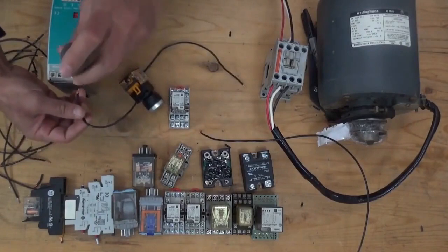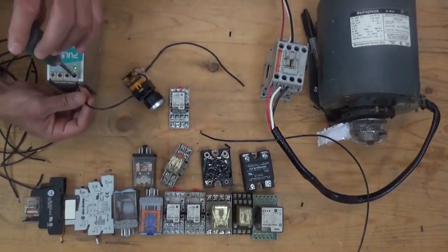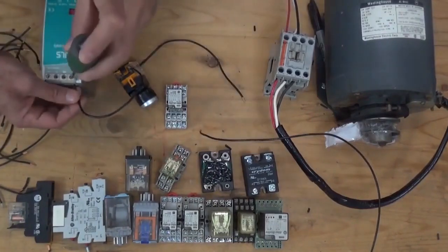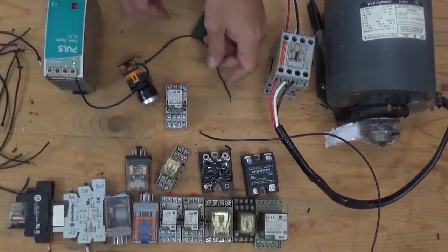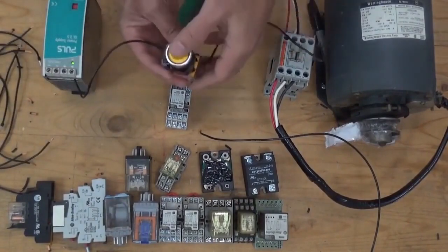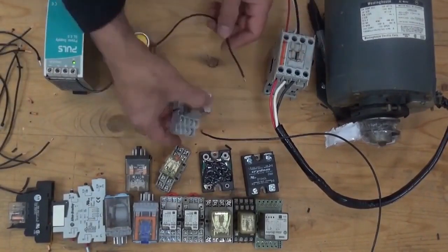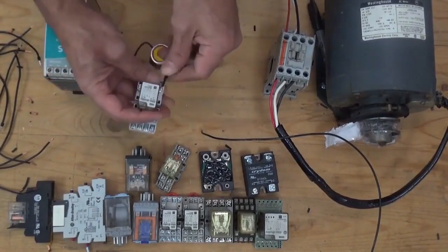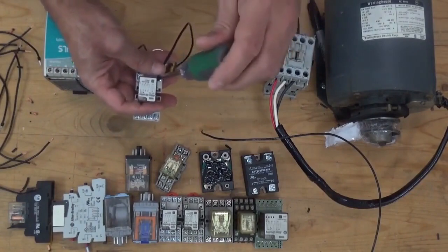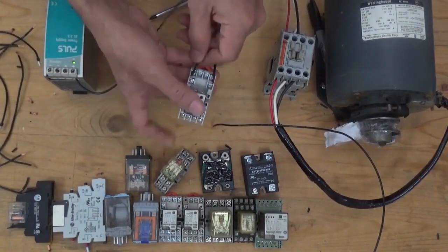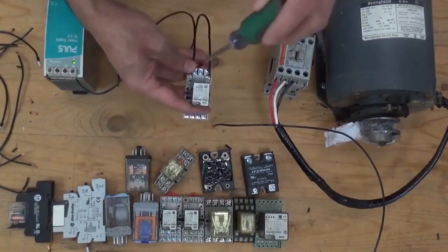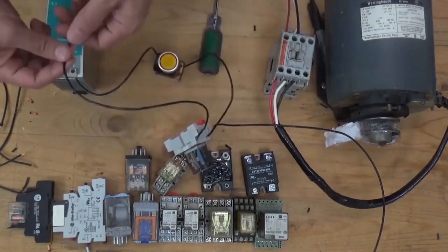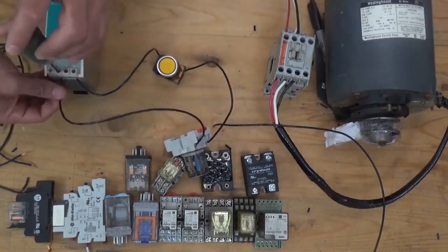From the positive of our power supply, we're going to connect it here. Positive of our power supply going to our switch. Positive of our switch going to coil of a relay, A1. From A2 of the relay, going back to the negative of the power supply.